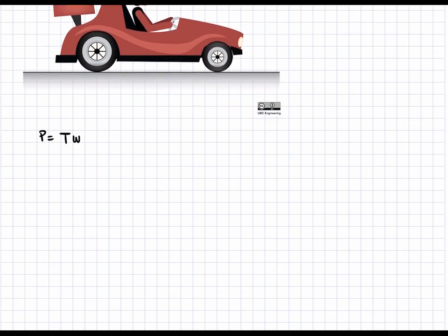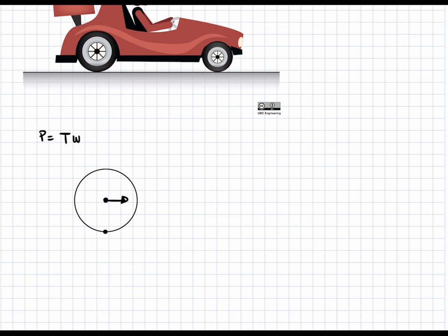Let's draw our wheel and mark the instantaneous center of zero velocity at the bottom. At the axle where it connects to the car, the velocity v equals 80 kilometers per hour. The distance from the instantaneous center to the axle is simply the radius of the wheel, r equals 0.5 meters. Omega is the angular velocity we are trying to determine.